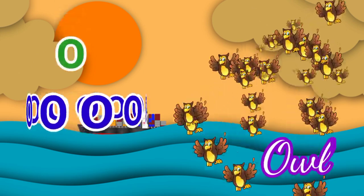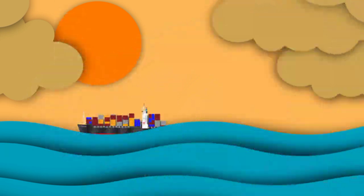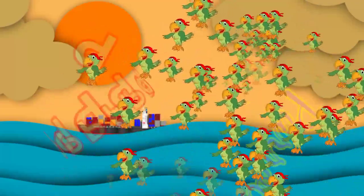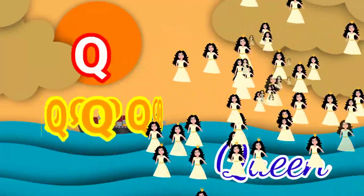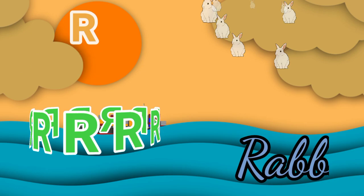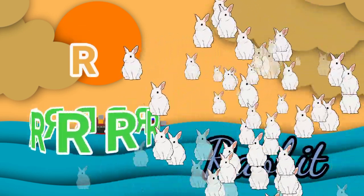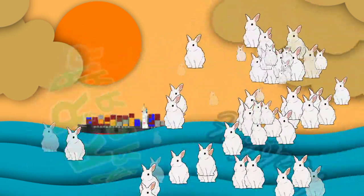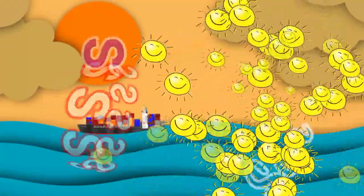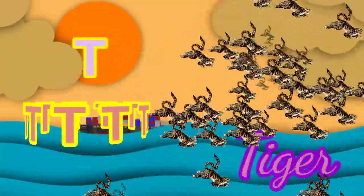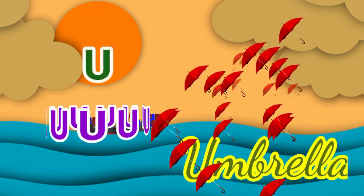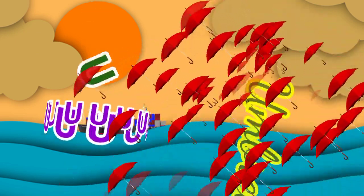O for owl, P for parrot, Q for queen, R for rabbit, S for sun, T for tiger, U for umbrella.